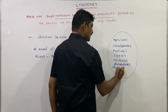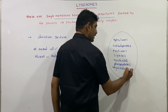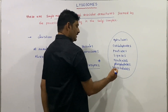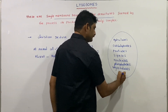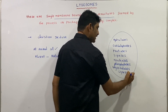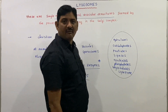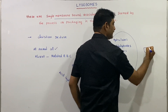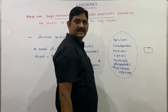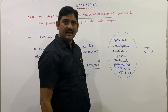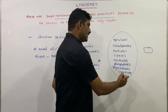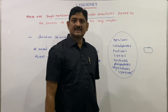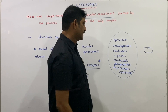Next is lysozyme. Lysozyme is involved in the lysis of bacterial cell walls. The bacterial cell wall is made up of peptidoglycan, and lysozyme breaks this down. Lysozyme is also present in saliva and tears.